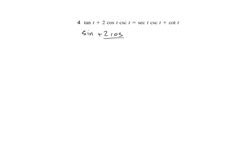Let's change everything again. We have sine plus 2 cosine. Cosecant is 1 over sine, so that goes here. This is sine over cosine. We multiply by sine over sine and cosine over cosine to get a common denominator, giving us sine squared plus 2 cosine squared all over sine cosine.